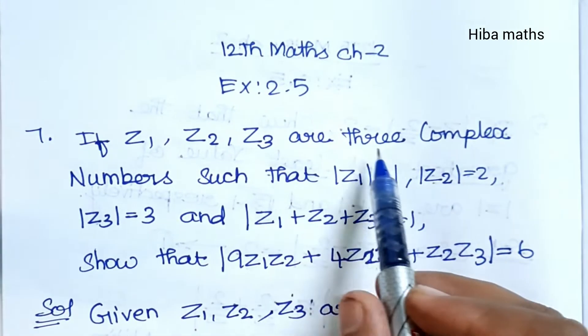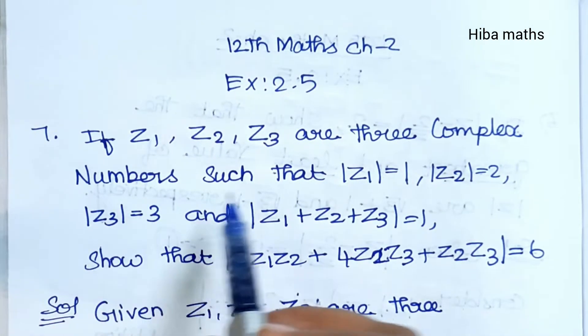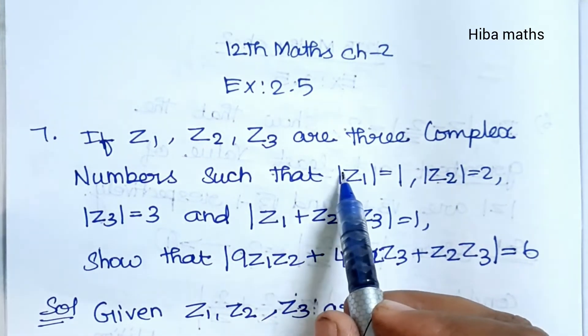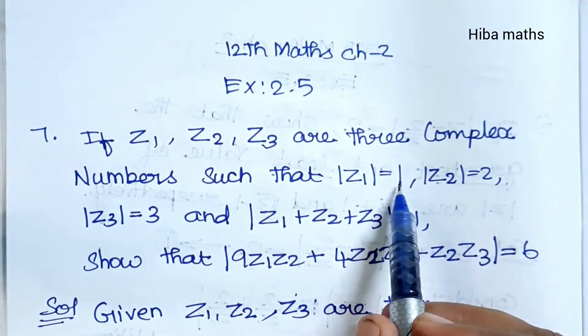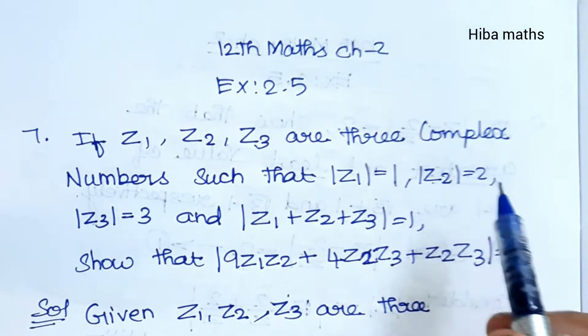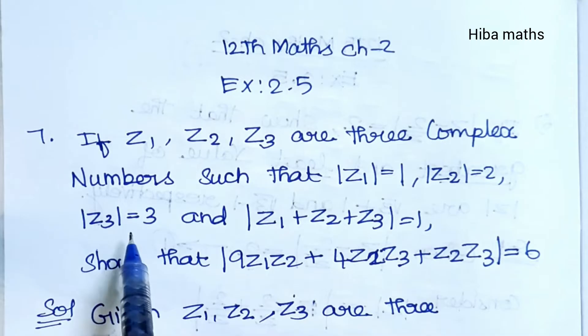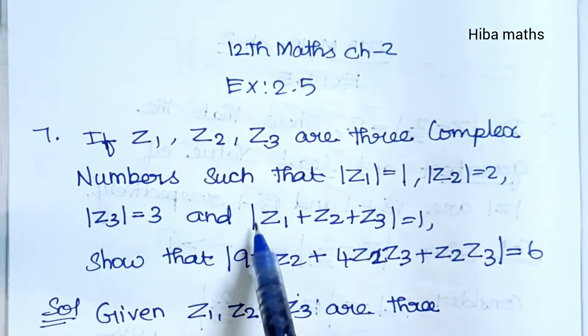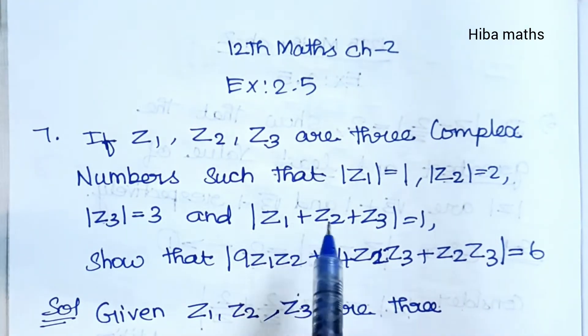If Z1, Z2, Z3 are three complex numbers such that modulus of Z1 is equal to 1, modulus of Z2 is equal to 2, modulus of Z3 is equal to 3.